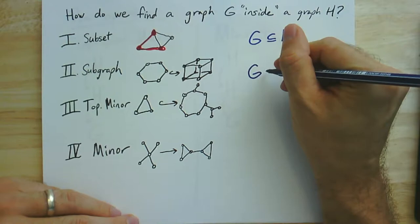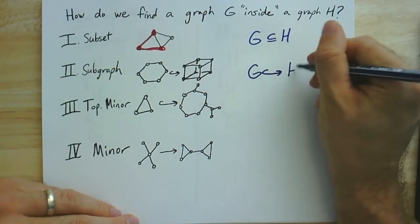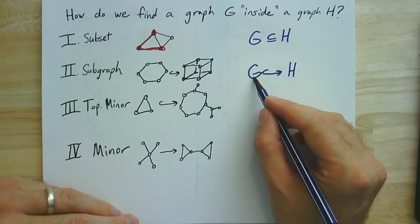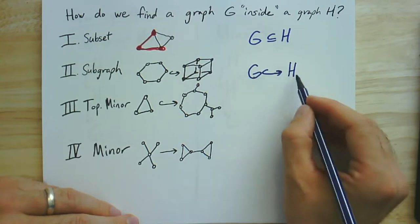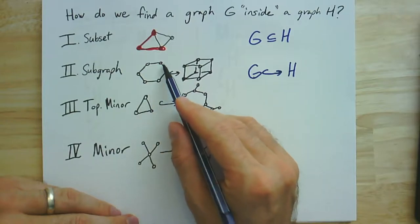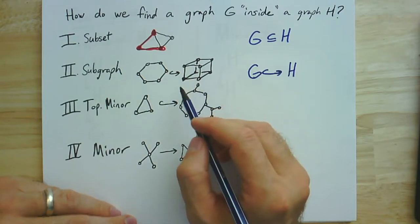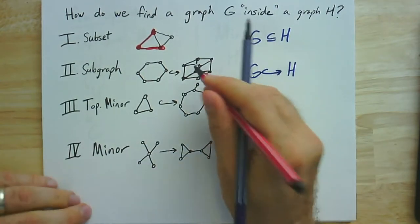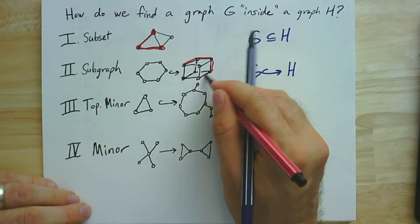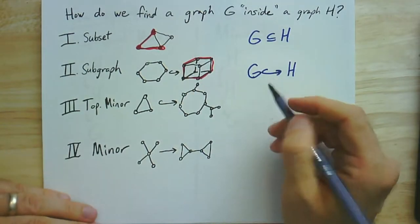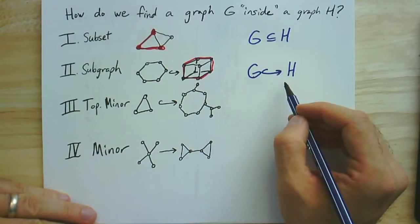And we did that up to isomorphism. And in that case, we just had some injective homomorphism from the graph G into the graph H. So in this case, I have a cycle of length six, and there is an injective homomorphism from that cycle to this cube graph. There's several different ways of doing it, but you might map it to this outer cycle here. And that captured the slightly more general notion of subgraph up to isomorphism.